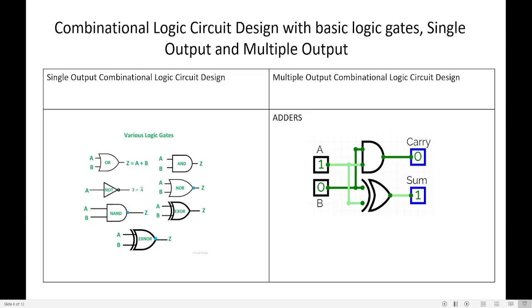Good afternoon students. Let us now see how to design a combinational logic circuit with basic logic gates for single output and multiple output circuits. A combinational logic circuit is a circuit whose output depends upon the input. The output Z depends on the input A and B. Such circuits are called combinational logic circuits.